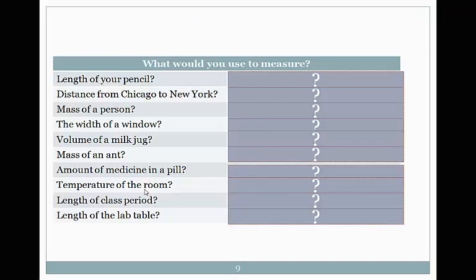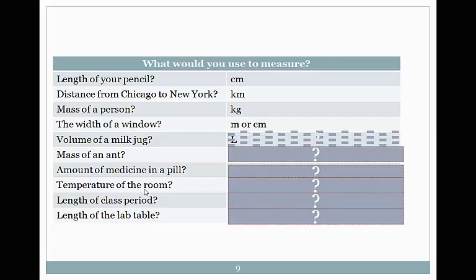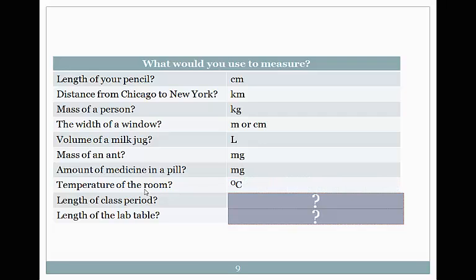What unit would you use to measure each of the following? Length of your pencil? Centimeters. Distance from Chicago to New York? If you said kilometers, you'd be right. Mass of a person? Kilograms. The width of a window? Meters or centimeters? Volume of a milk jug? Liters. The mass of a very small, tiny insect, ants? Milligrams. How about the amount of medicine that eats in a pill? Milligrams. Temperature of a room? Kelvin? Celsius. Length of the class period? Minutes. Length of the lab table? Meters.